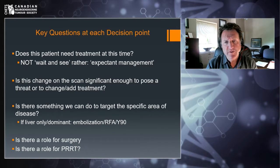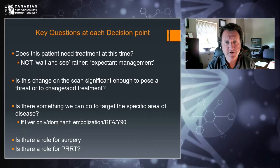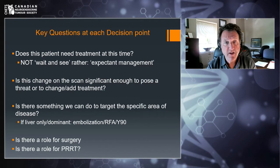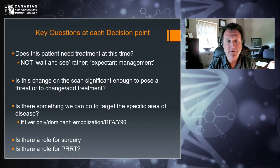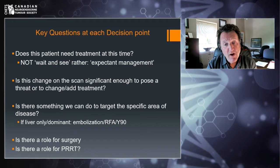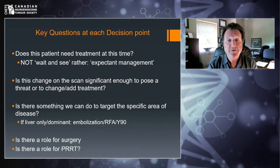There are five big questions that we as oncologists ask ourselves when we sit around the table in our multidisciplinary teams. Does this patient need treatment at this time? Some patients with very slowly developing disease might not actually need any treatment and can be safely monitored — not just letting people go, but managing patients with routine imaging and deciding at what point treatment might be helpful. A second concept is: while a patient is on treatment, is there a change on the scan significant enough to change or add treatment?